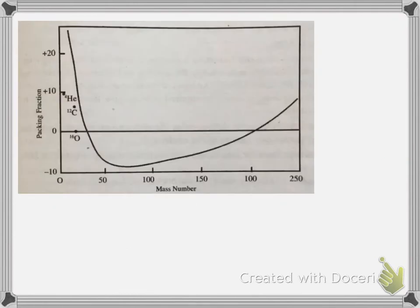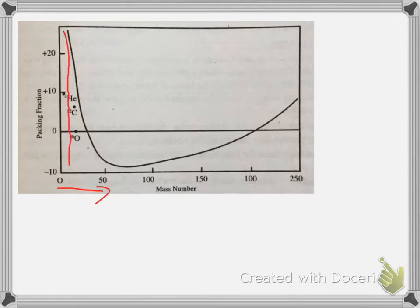Packing fraction is high for elements of low mass number. But for helium, carbon-12, and oxygen-16, it is a relatively lower positive value, meaning they are somewhat stable. From the graph, lighter elements with low atomic mass have a high packing fraction and are unstable. The positive value decreases for helium and carbon, which are close to zero and considered somewhat stable. It then decreases further, becoming negative, and elements in that region are found to be stable.